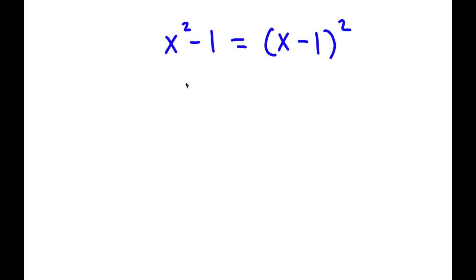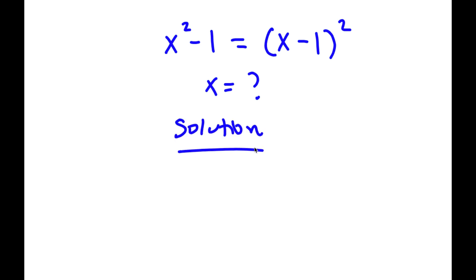In this problem, I have x squared minus 1 is equal to x minus 1 squared. I want to find the value of x. So to start my solution, I'll begin with x squared minus 1 is equal to x minus 1 squared.